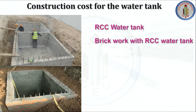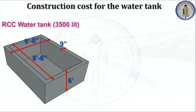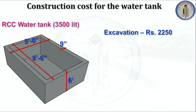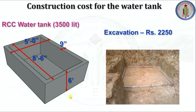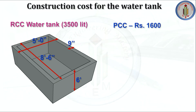To avoid these problems, we must use proper construction methods with good quality materials. Now let's see the cost breakup for a 3500-liter RCC water tank. The outer dimensions are: width 5 feet, length 8.5 feet, and height 6 feet. For excavation we require 2250 rupees. For laying PCC (cement and sand), we need 1600 rupees. For concreting — bottom slab, sidewalls, and top slab — we require 16,730 rupees.